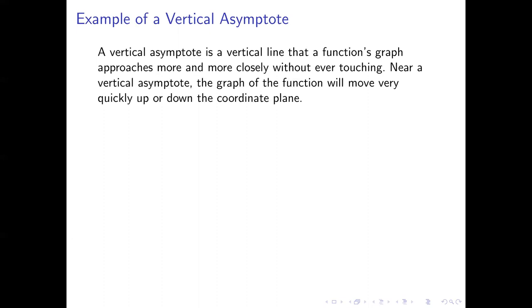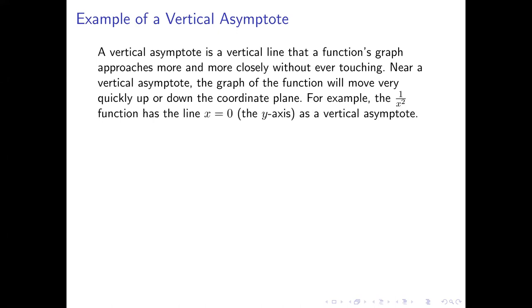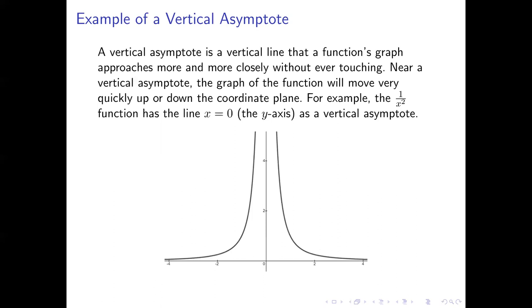You can already see some limit-type vocabulary in that definition. What we typically see near a vertical asymptote, if we're looking at the graph of a function, is that the graph moves very quickly up or down the coordinate plane. An example of a function that has a vertical asymptote is the 1 over x squared function. Here's a graph of it, and the line x equals 0, which is just the y-axis, is a vertical asymptote. As we move our x coordinates closer and closer to 0, the graph gets closer and closer to that asymptote but never quite touches it — you can see it shooting up the coordinate plane very quickly.